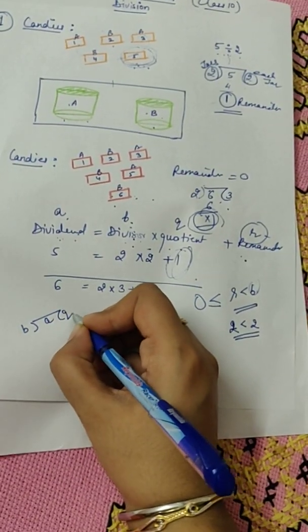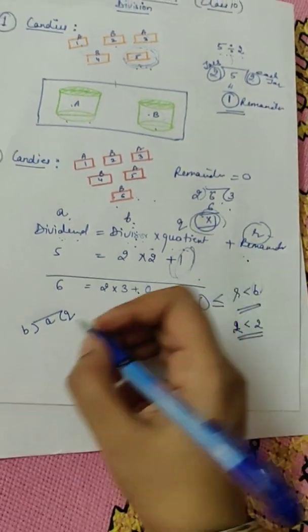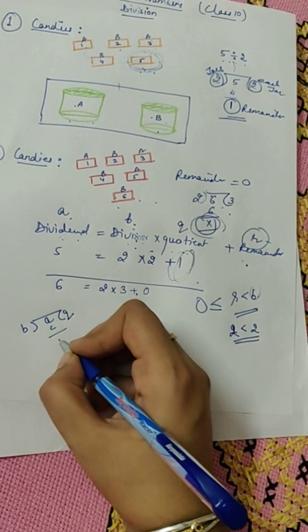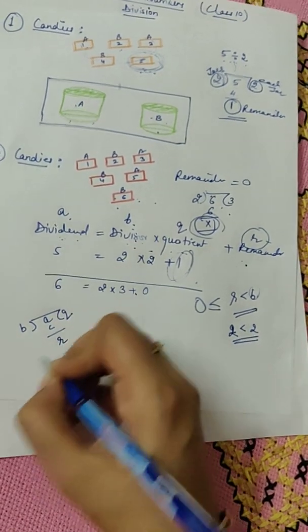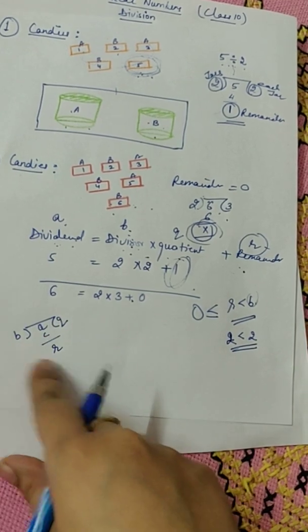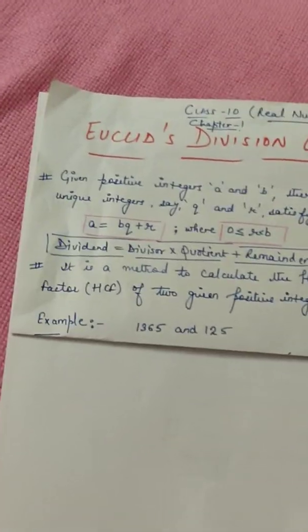And you will get a remainder R. So this can be written as A is equal to BQ plus R. And that is what Euclid's Lemma says.